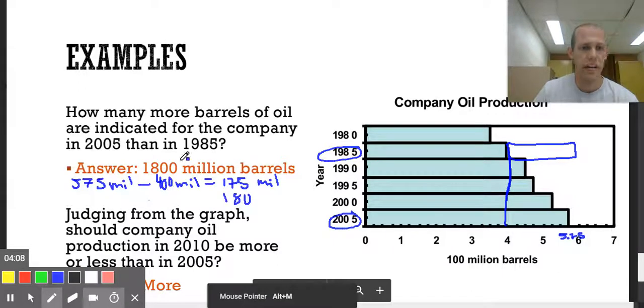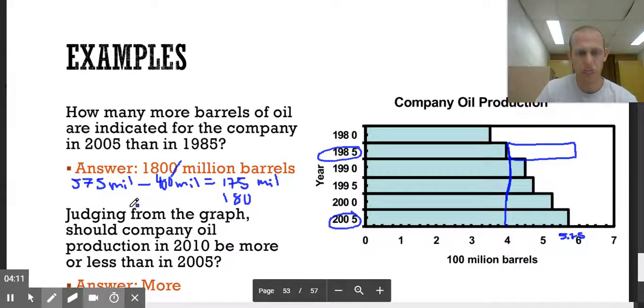Sorry, I had an extra zero here that I didn't need. When you do the calculation, it will be 180 million, depending on how you kind of round it. I rounded it different with that 5.75, so I got 175 million for the difference.